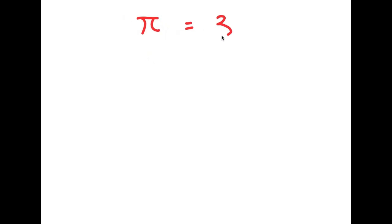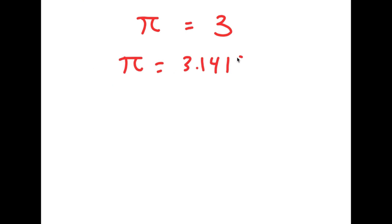In this video, I'm going to be proving that pi is equal to 3. As you probably already know, pi is an irrational number, meaning it doesn't have a whole number value — it's actually equal to 3.14159 and on and on forever. So in this video, I'm going to be proving that pi is actually equal to 3 and not the irrational number that we all know it is.